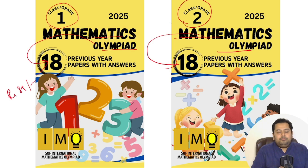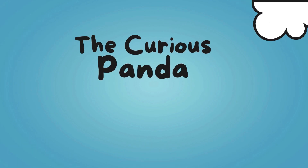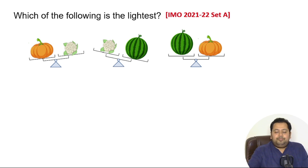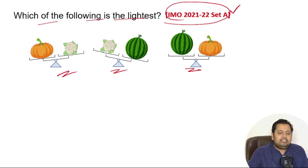Now let's go to today's question. Which of the following is the lightest? This was asked in IMO 2021-22 Set A. You can see there are three weighing scales. In the first weighing scale you can see a pumpkin and a cauliflower.